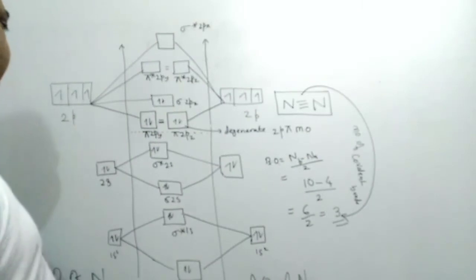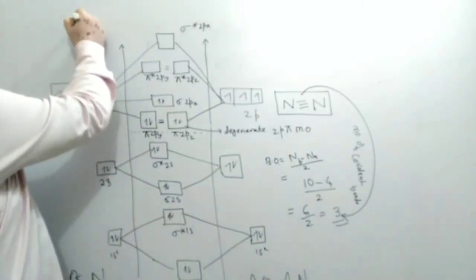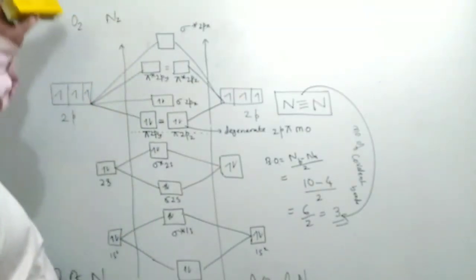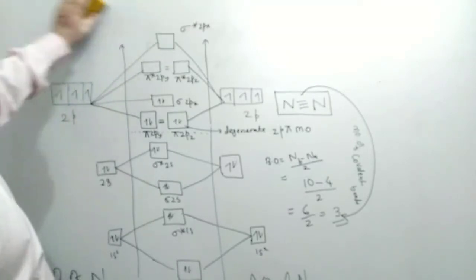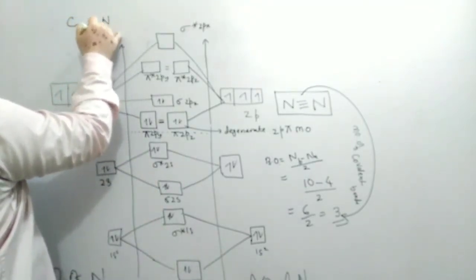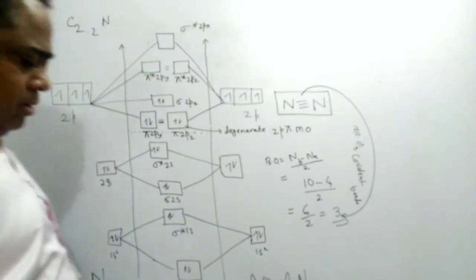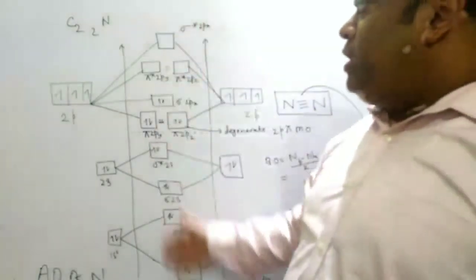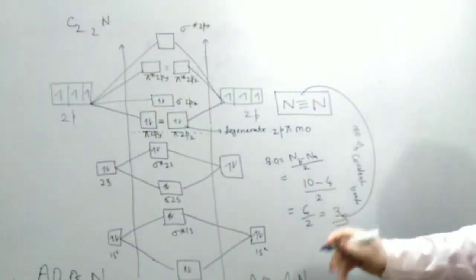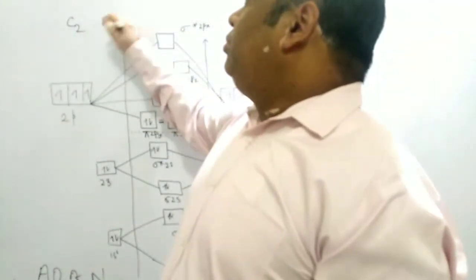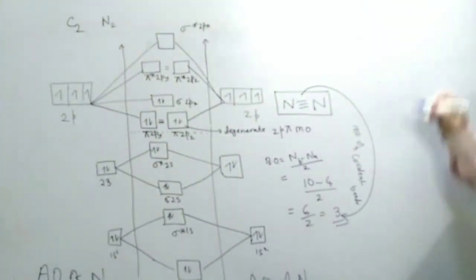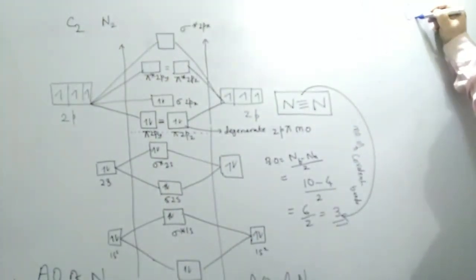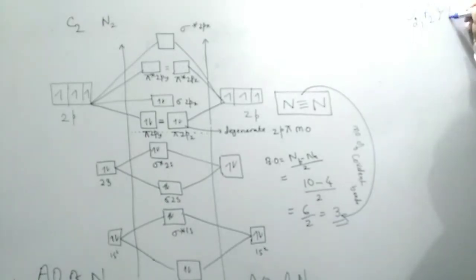This pattern was correct for molecules up to C2 and N2. But there is a small change in the order of these molecular orbitals in case of O2, F2, and Ne2. In the case of O2, F2, and Ne2, there is a small change — the sigma 2px comes below pi 2py and pi 2pz.